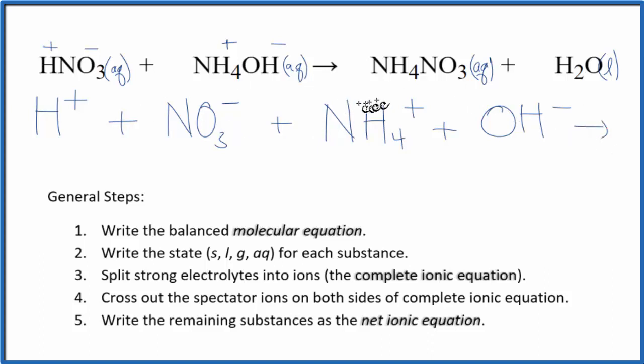These are the reactants in our net ionic equation. For the products, we said the ammonium ion positive, nitrate negative. So we have NH4 plus, and then we have the nitrate ion, NO3 minus.